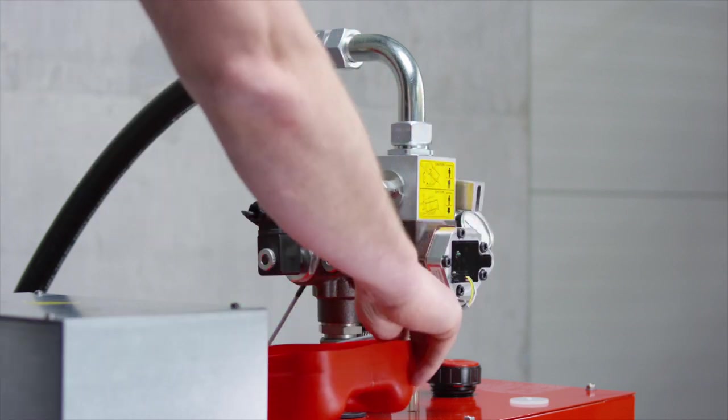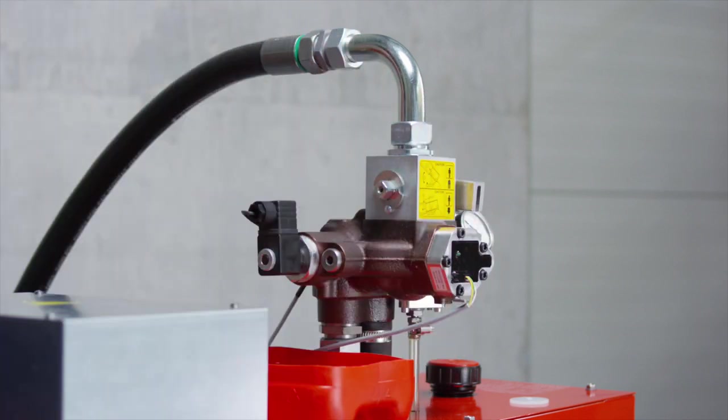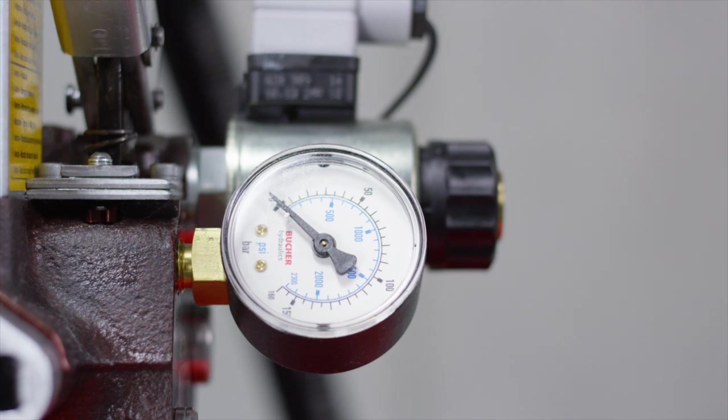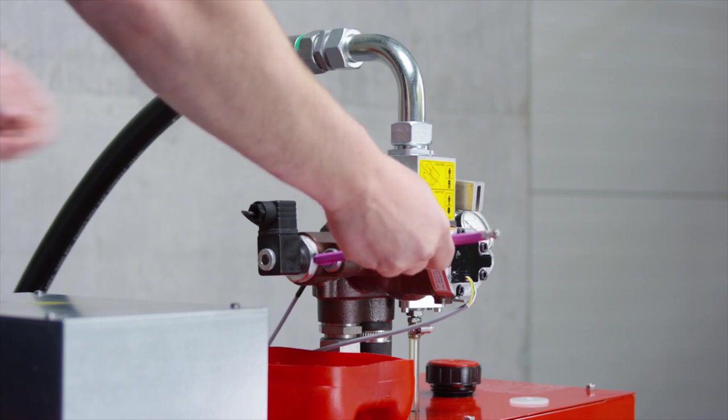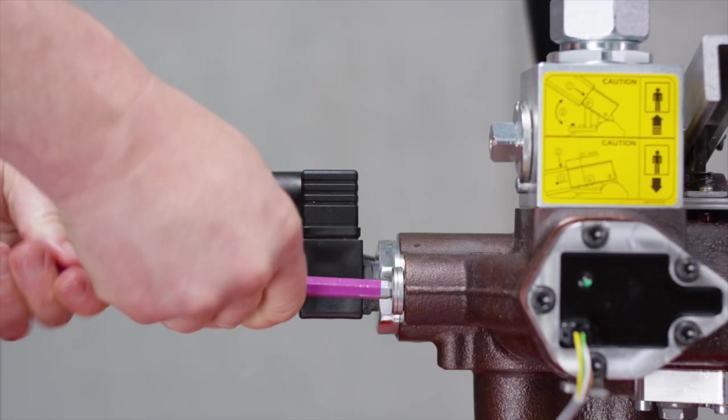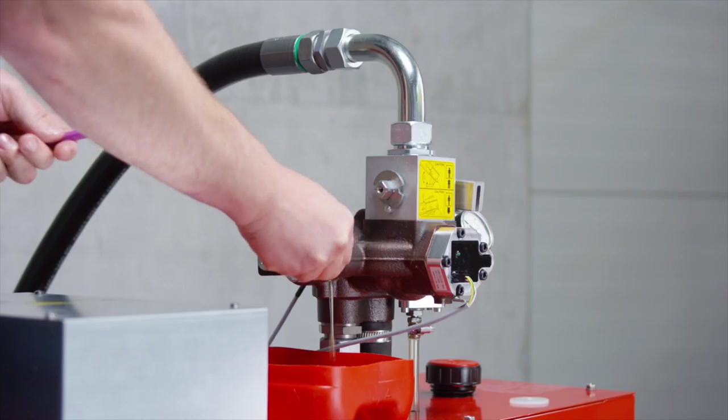Place a suitable oil drip tray below the valve. System has to be depressurized. Check pressure at gauge. Loosen the screwed plug with an 8 mm Allen key. Remove the spring.